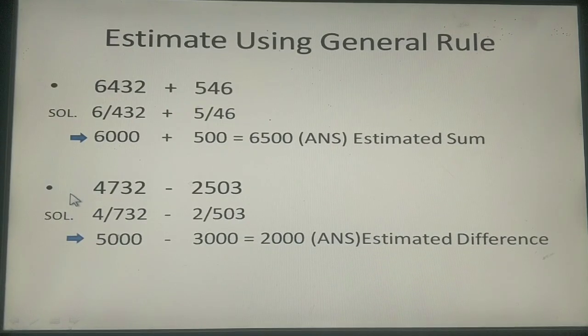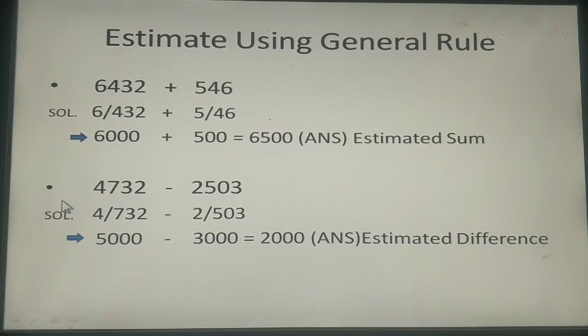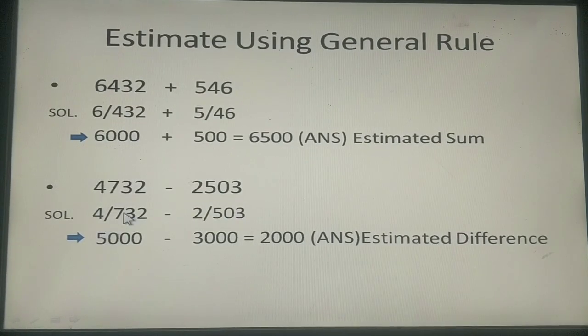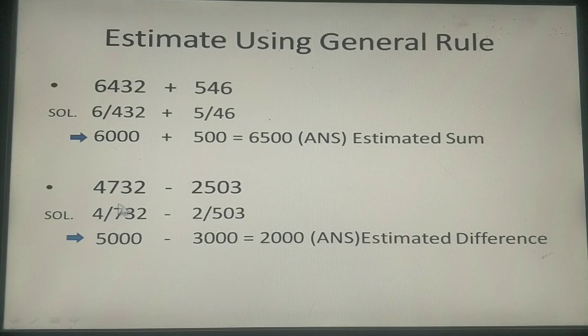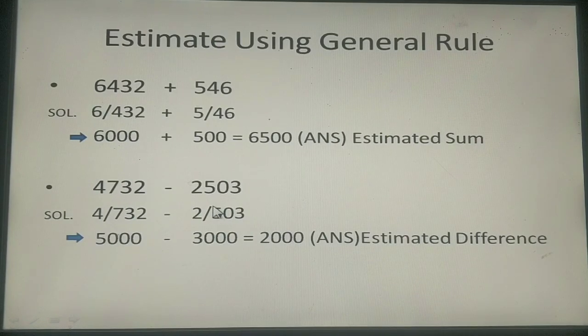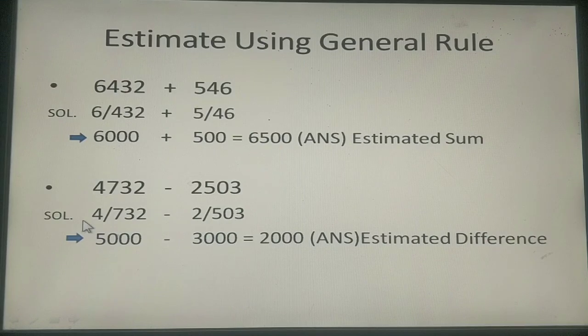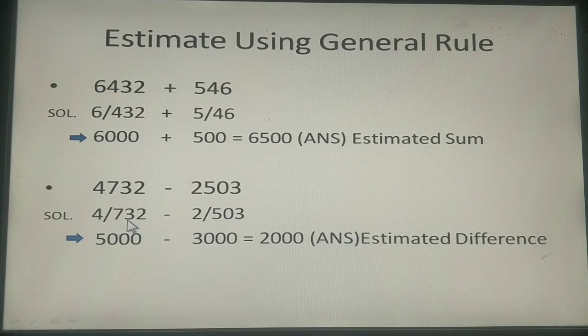For example 2. You are asked to subtract these two numbers. Here. Again we are going to put a slash after 4. And a slash after 2. Why? Because according to the general rule we have decided that we would always round off the first digit of both the numbers. So again as discussed earlier. The last three digits that is after the slash. We are going to make it as 000.